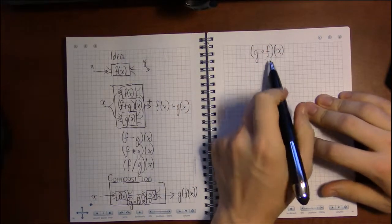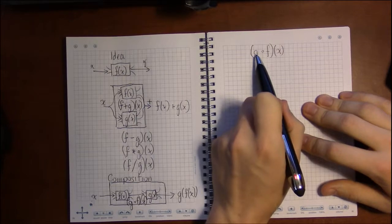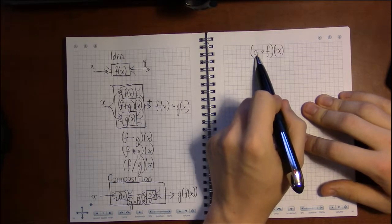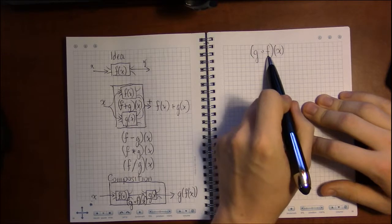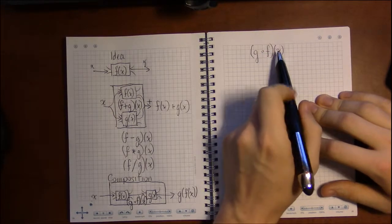This is just our way of saying, g is going to be the last thing you apply, f is going to be the next to last, and x is going to be your input.